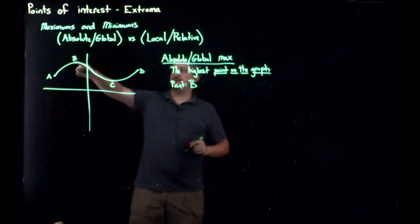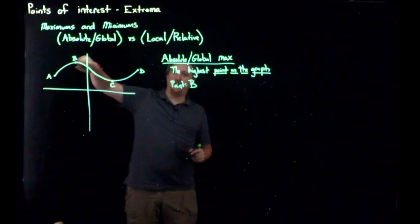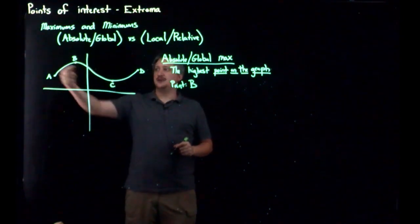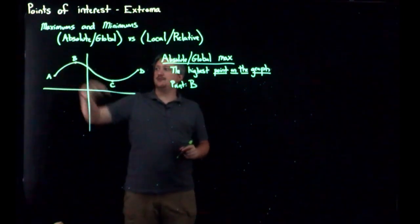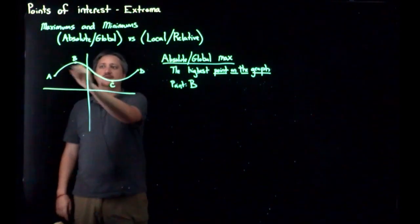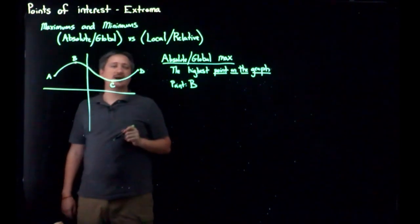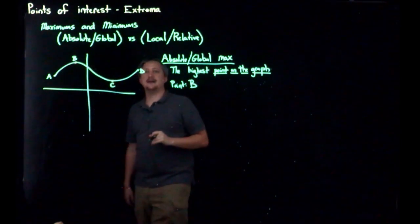Where really this is some x comma y point, but it's that part of the graph is my absolute max. And that's because if I look anywhere else on the graph, which you'll note there's no arrows, I've truncated the graph. So if I look anywhere else, it's not past that. That is the tallest point on the graph. And that's why it's the absolute or global max.